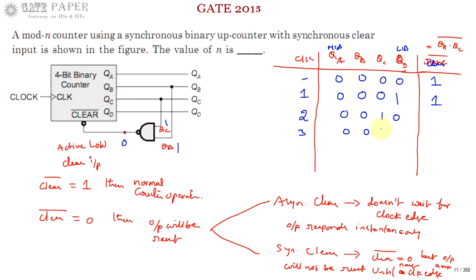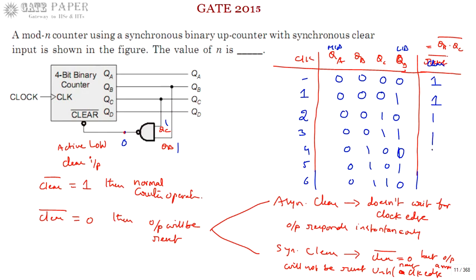Continuing the count: 0011, 0100, 0101, 0110. These are the 3rd, 4th, 5th, and 6th clock edges. Up to this point, clear bar remains logic 1 since at least one of QB or QC is zero. When the counter reaches 0110 (the sixth value), the NAND output becomes 0, making reset bar equal to 0.